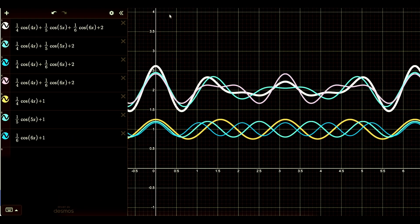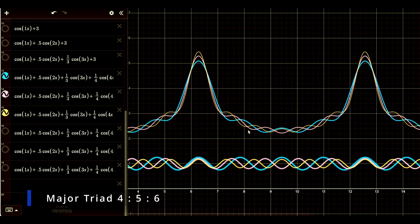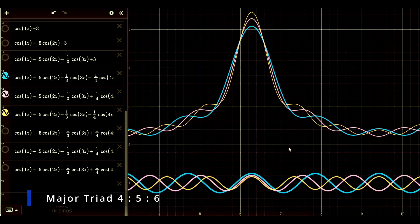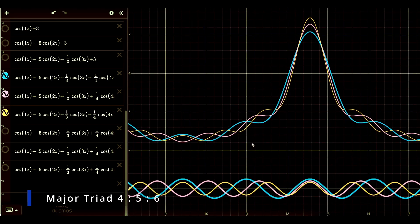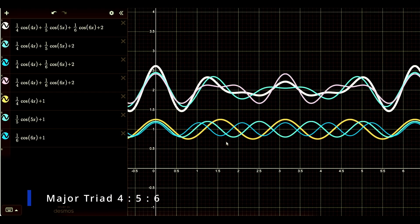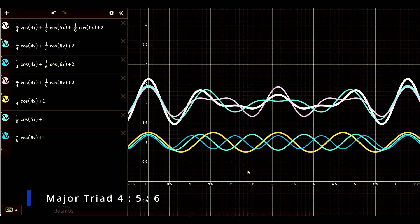Next I want to take a look at the major triad, which is formed between harmonics four, five, and six. Here it is represented in the harmonic series. And here it is isolated by itself.